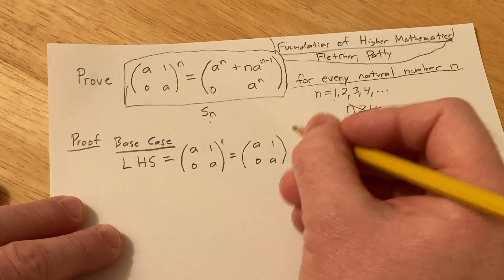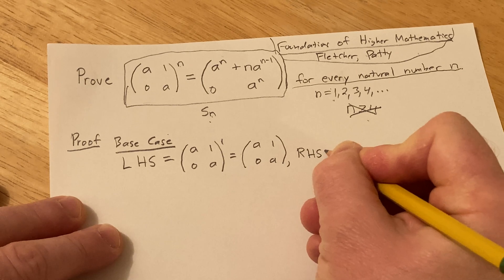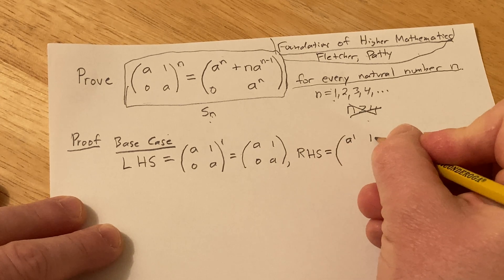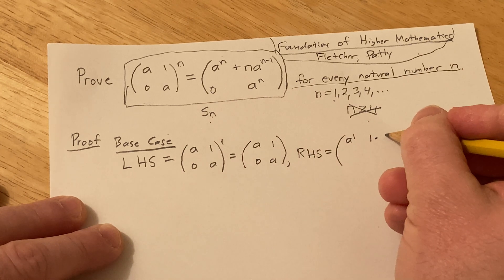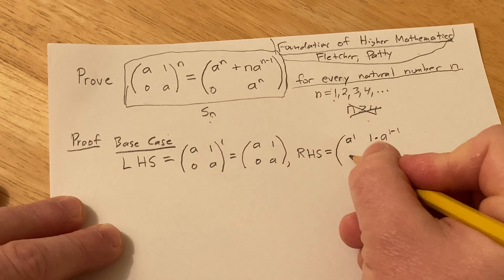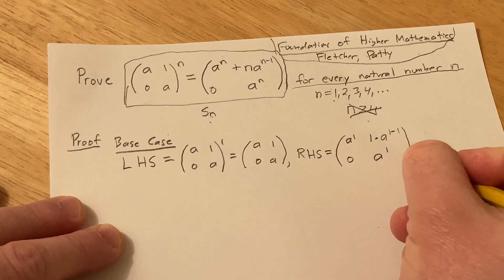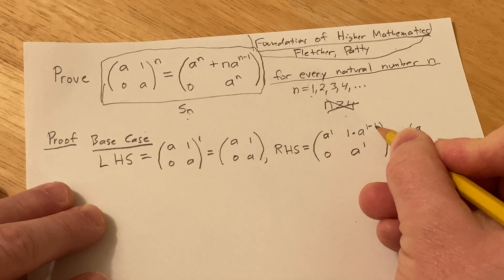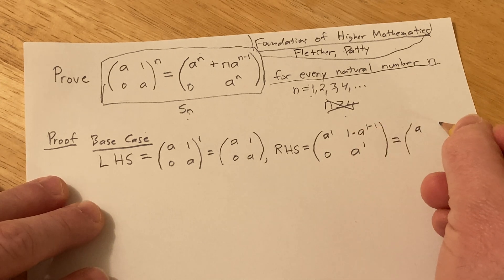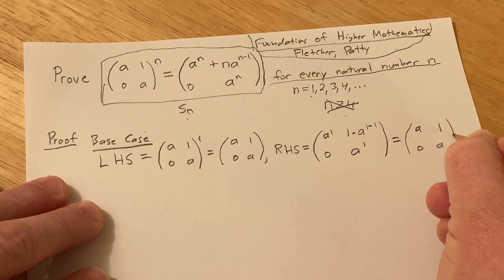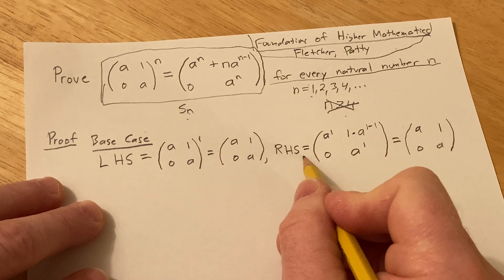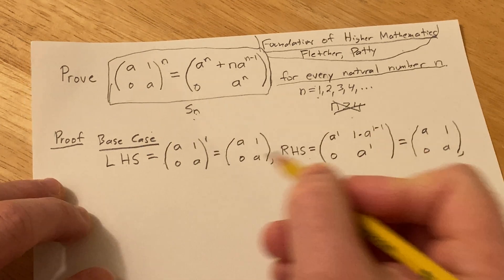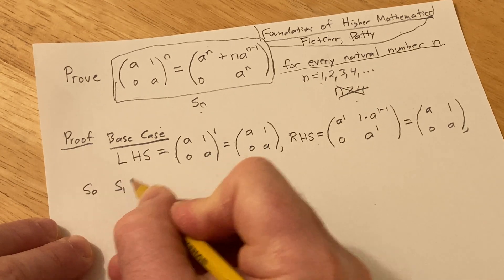Now let's verify the right-hand side — RHS. We're going to put a 1 where all the n's are. So it's going to be A to the 1, then 1 times A to the 1 minus 1, which is A to the 0. A to the 1 is A, and 1 minus 1 is 0, so A to the 0 is 1. So 1 times 1 is 1, and we get the matrix A, 1, 0, A. The left-hand side equals the right-hand side. Therefore our statement is true when n equals 1, so S sub 1 is true. The base case is usually easy in problems like this.